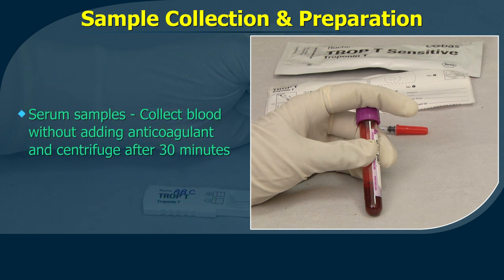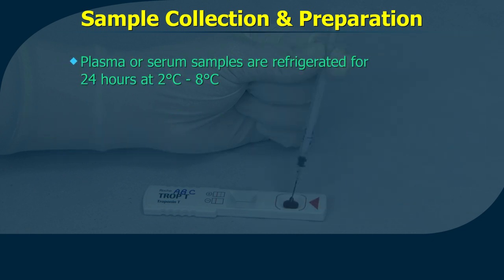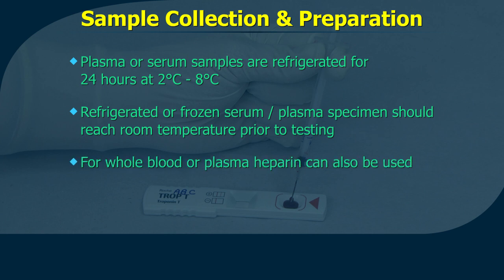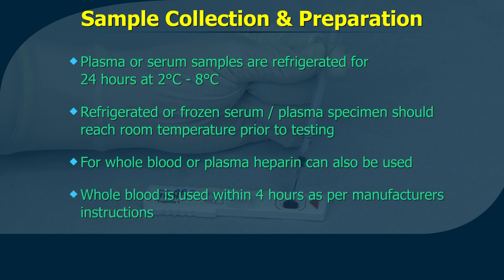If serum samples are used, collect the blood in a tube without anticoagulant and allow clotting. Plasma or serum samples may be refrigerated for 24 hours at 2 to 8 degrees centigrade. Refrigerated or frozen serum or plasma specimens should reach room temperature and be homogenous prior to testing. Whole blood or plasma samples using heparin as the anticoagulant can also be used.